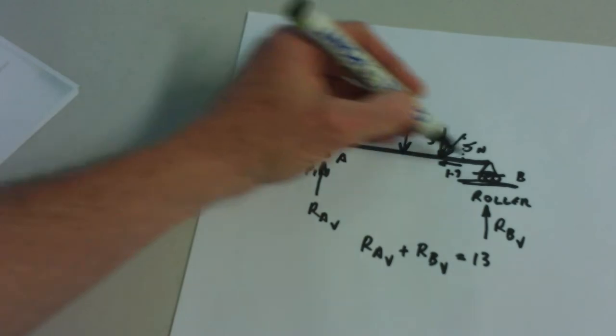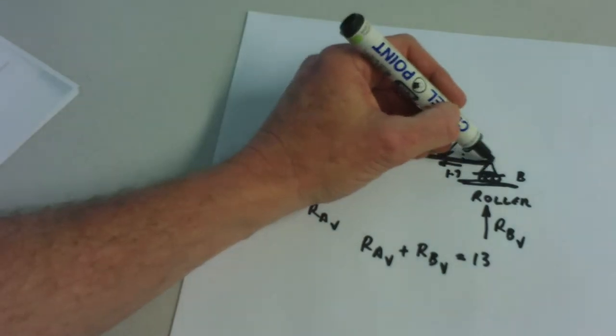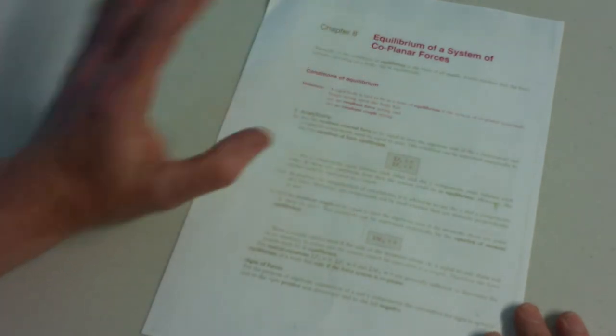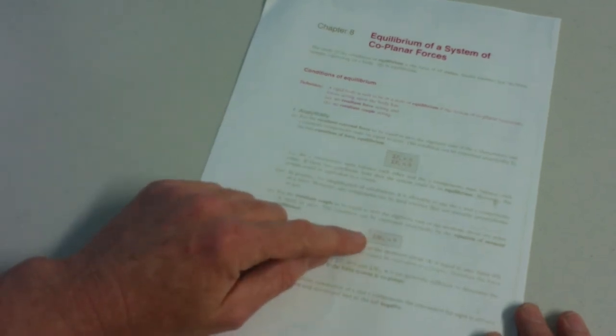Going back to the notes: the horizontal and vertical components must be equal to zero. We've just looked at that. But this condition about the moments is important too.